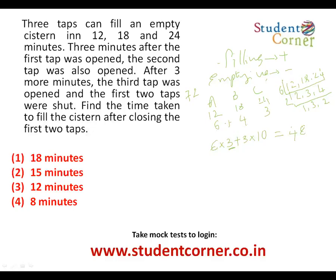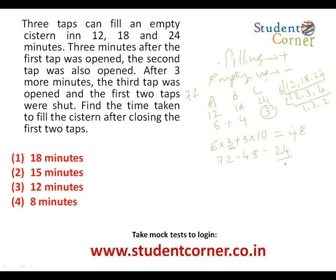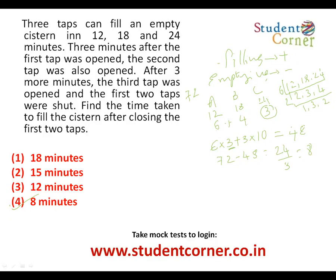After those 6 minutes, 48 units are done out of 72, leaving 72-48 = 24 units. Then after 3 more minutes Tap C opens while Taps A and B are shut. Only Tap C fills at 3 units/min: 24÷3 = 8 minutes. Therefore Tap C alone takes 8 more minutes to fill the remaining tank.